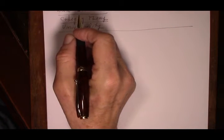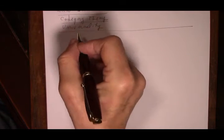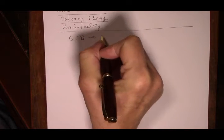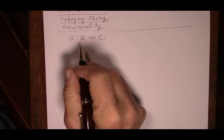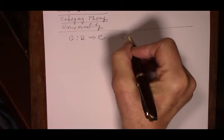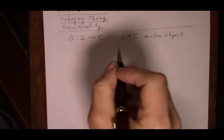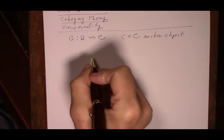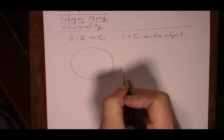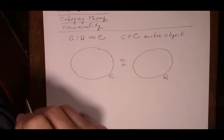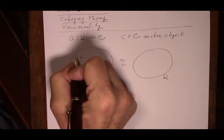To begin, let's take another look at the comma category. We start with a functor G from Category D to Category C, and an object C in C — this is our anchor object. Category C is here, Category D is here, and functor G goes in this direction. C is our anchor object.